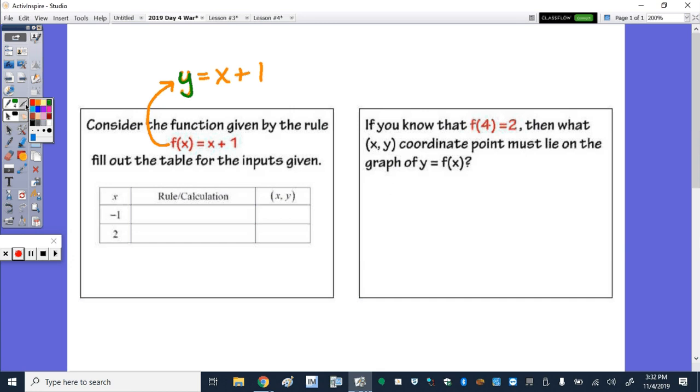So what this rule is saying is to get the output y, we need to take each x value and add one. Down below, this table wants us to show the rule or calculation in the middle. So we take our x of negative one, add one. Take our x value of positive two, add one. So negative one plus one is zero, that's your y value. And then two plus one is three. As a point, this would be the point negative one, zero and two, three, putting those x and y values together.